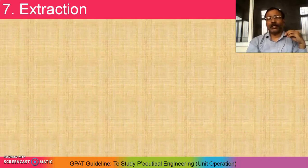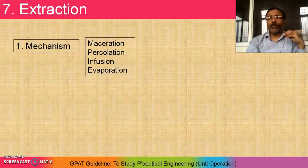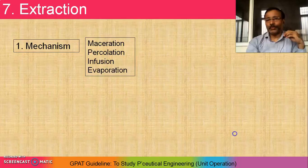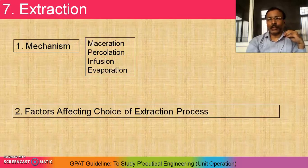Extraction — extraction of drug from crude drugs. It involves mechanisms such as maceration, percolation, infusion, and evaporation. Each mechanism has a specialty in its extraction process, so study exactly what the difference is between each type. Most importantly, check out the factors affecting the choice of extraction process — which drug is suitable for which type of extraction process. That is what we have to study in this chapter.